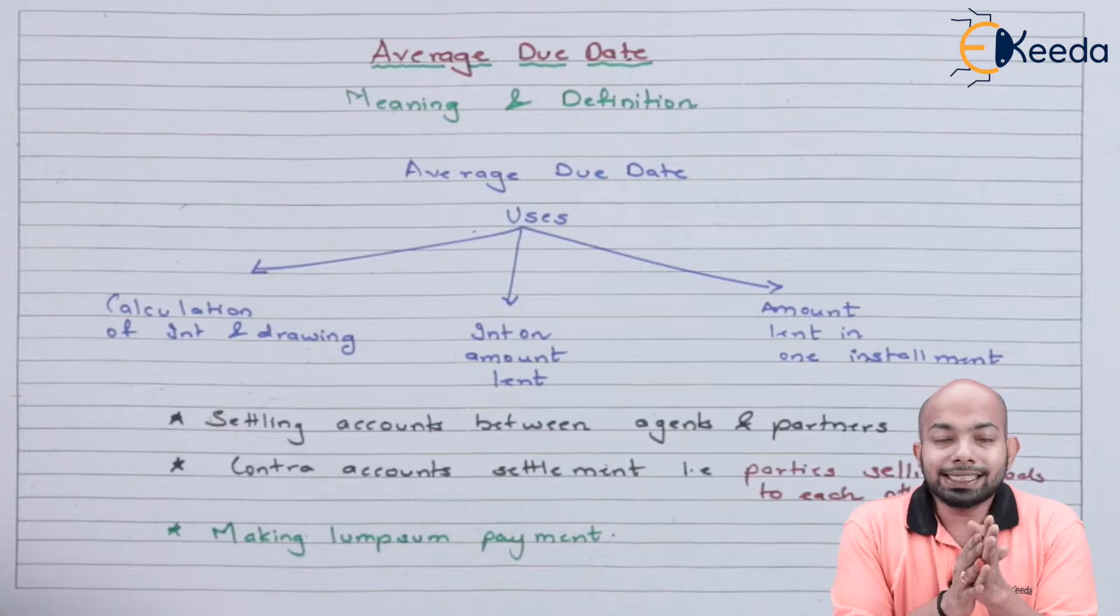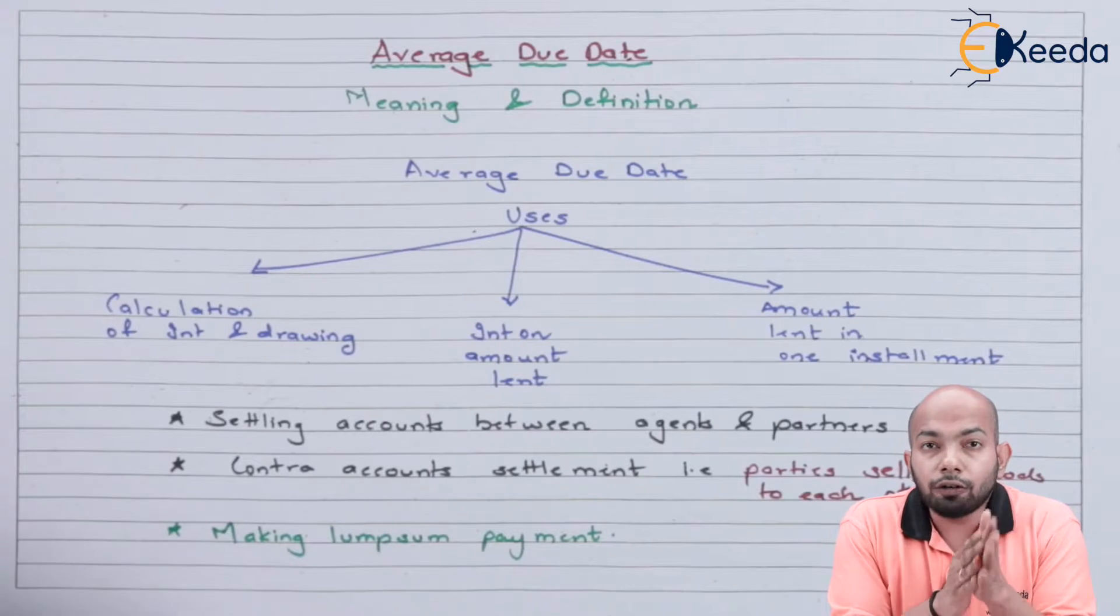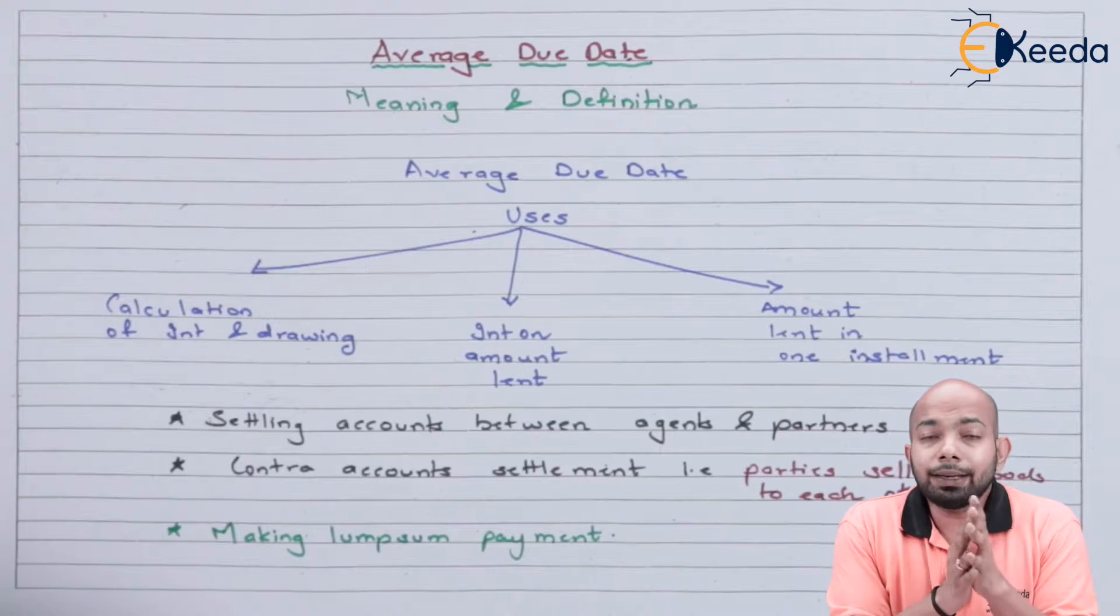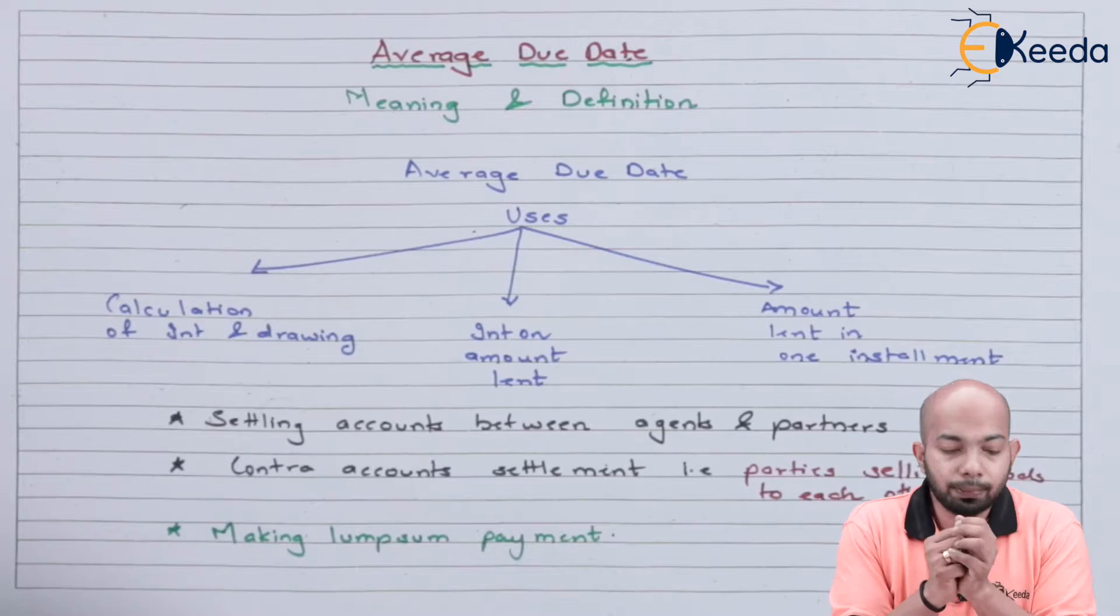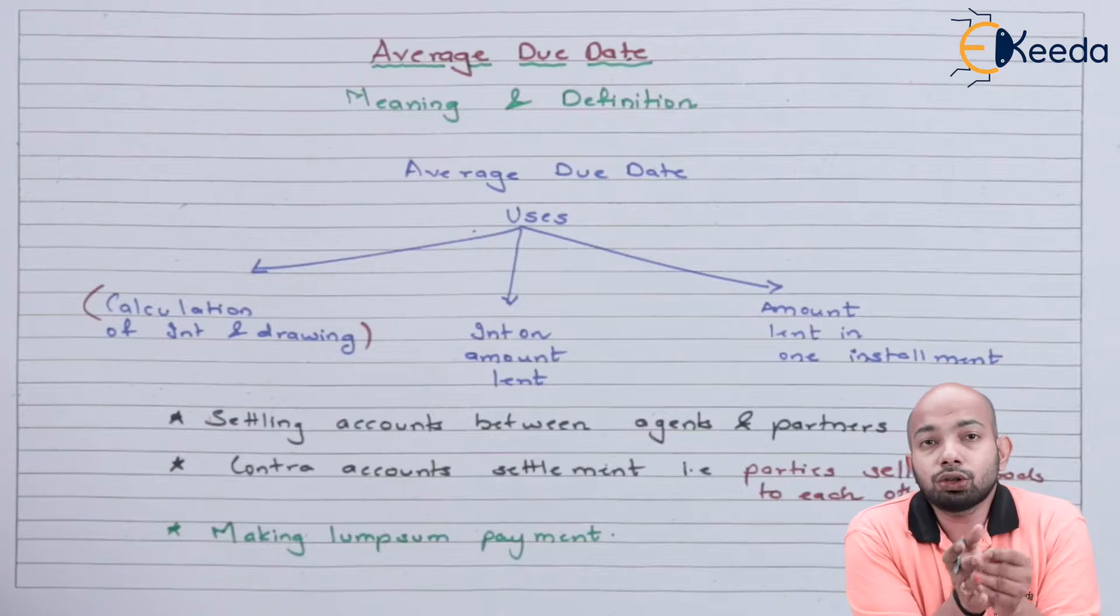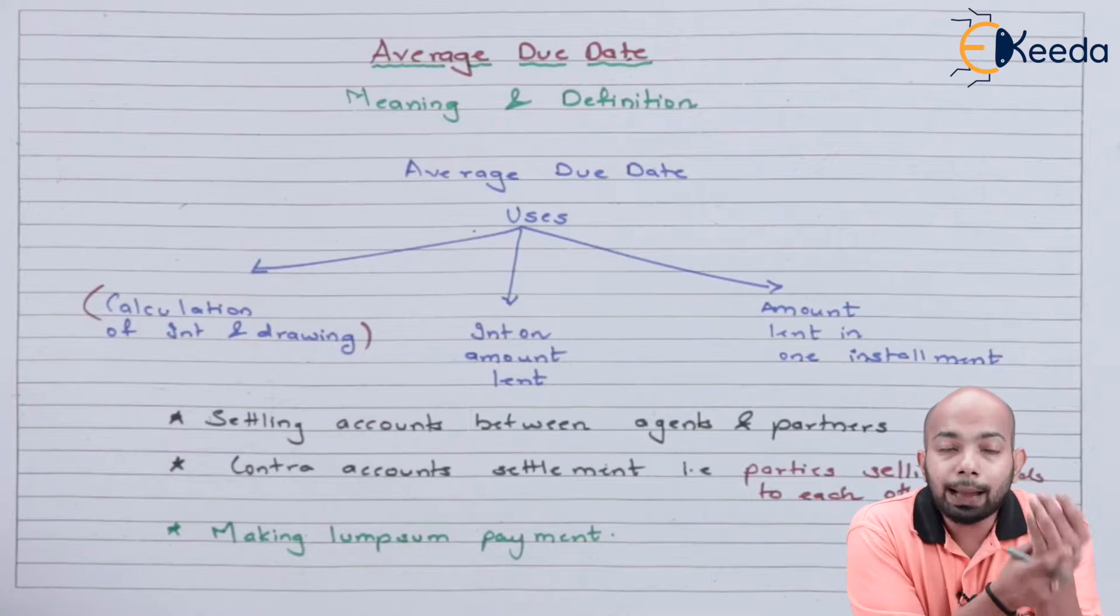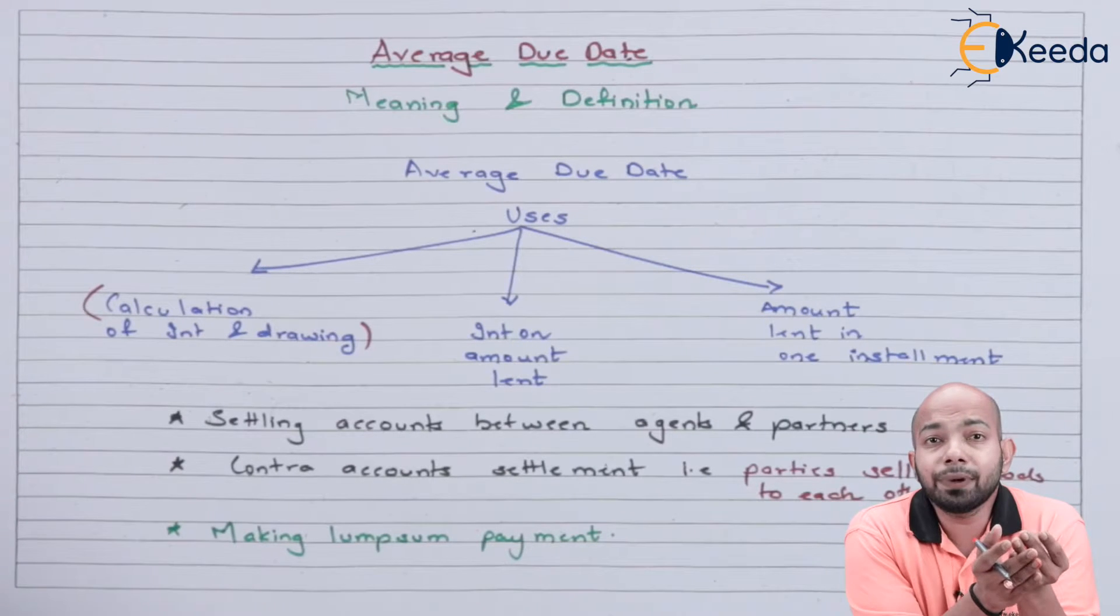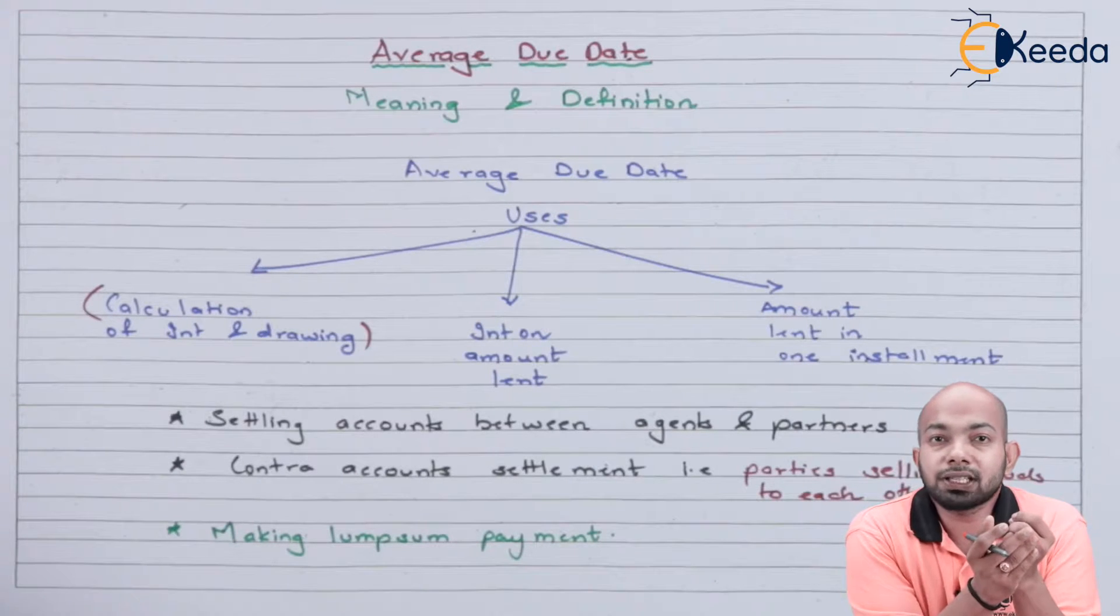Now we have jotted down certain points here. This refers to the uses of average due date or where this average due date concept can be used. There are three methods that have been mentioned down here. The first use of average due date is where you have to calculate the interest on drawings or capitals that are invested into the business. The interest that is supposed to be given both on the capital or on the drawing will be calculated using this specific concept.